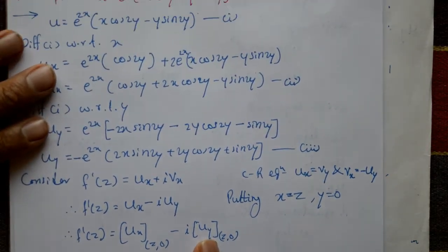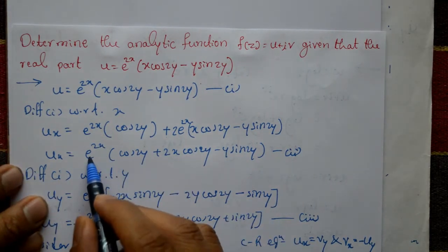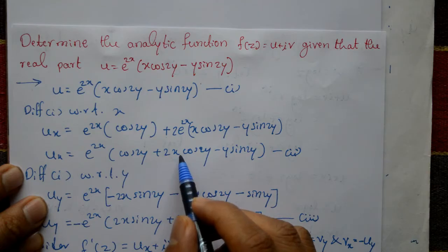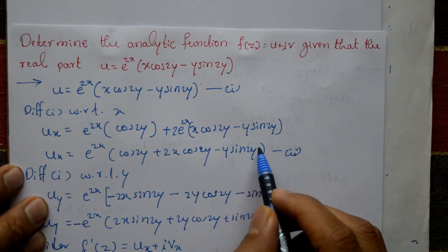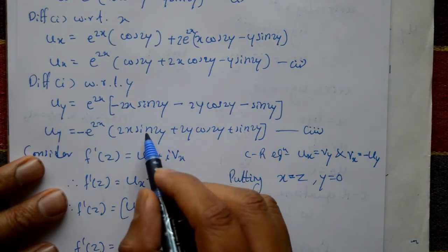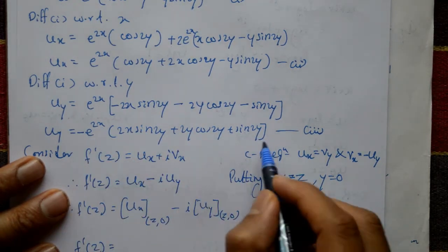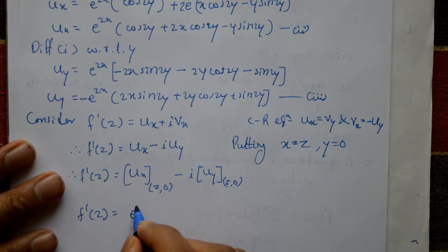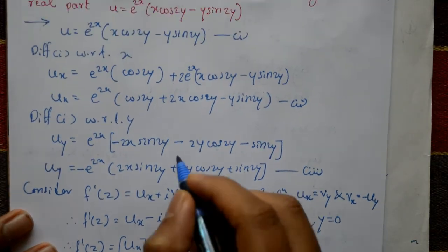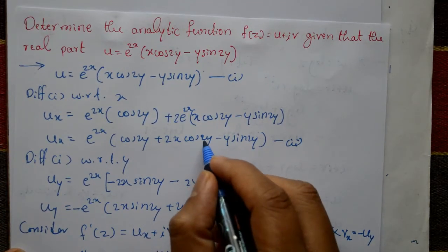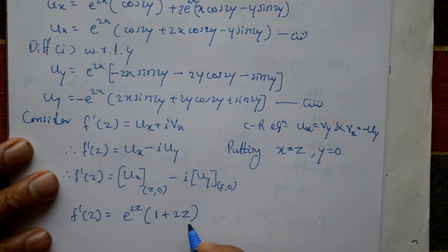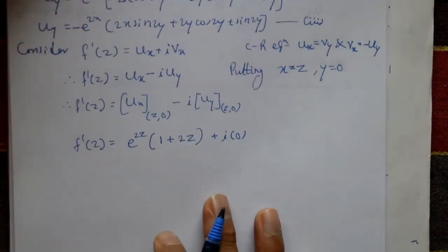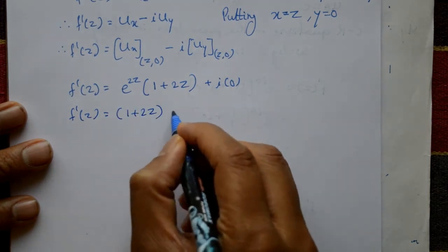Substituting x = z and y = 0: cos0 = 1, sin0 = 0. In equation 3, all terms with sin0 or y=0 vanish, so equation 3 contributes 0. From equation 2: e^(2z) * (cos0 + 2z·cos0) = e^(2z) * (1 + 2z). So f'(z) = (1 + 2z)·e^(2z).